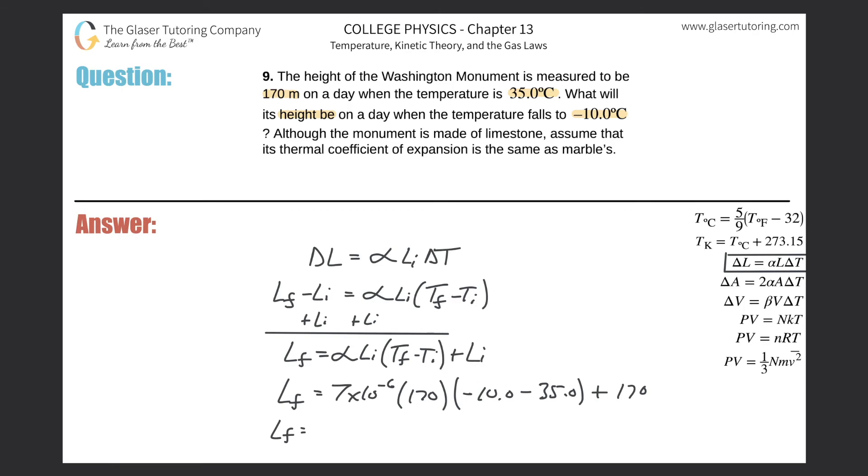So we have a value of approximately 169.95. If we had to think about rounding, we would basically round to 170. So essentially, it barely changes. This would be the final height. It's so close to the original height that it doesn't really make a difference.